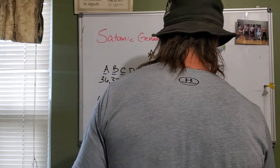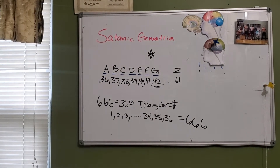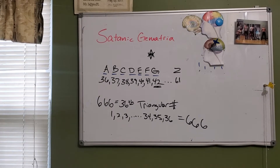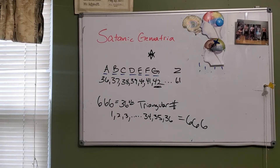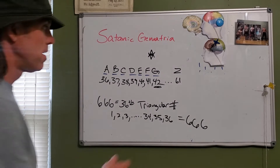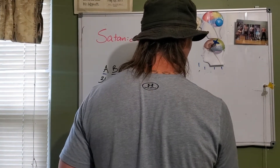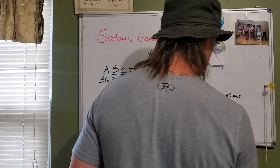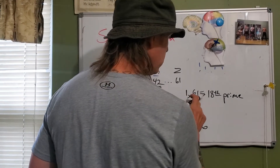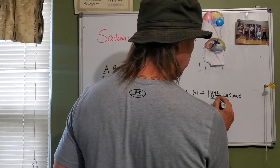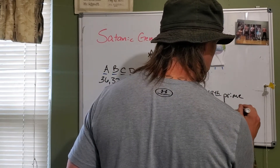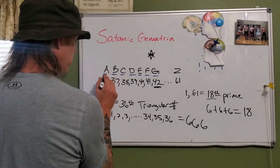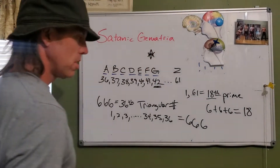What that means is when you add 1 through 36 together you get 666. And Z ends on 61 — 61 is the 18th prime number, meaning only 1 and 61 can divide into it. And 6 plus 6 plus 6 is 18, so the beginning number and the ending number are all a product of 666.